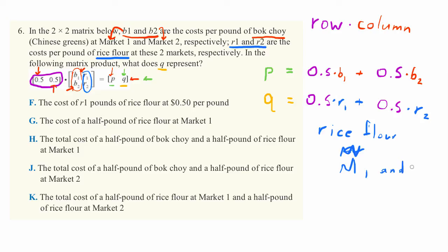For some reason, we didn't want to buy all our rice flour at just one market. We kind of mixed it up. And so if we read through the possible answers here, we'll see that K says Q is equal to the total cost of a half pound of rice flour at market one and a half pound of rice flour at market two. That's exactly what this equation stands for.